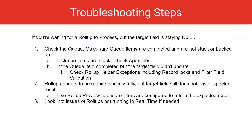If you're waiting for a roll-up to process but the target field is staying null, check the queue. Make sure queue items are completed and are not stuck or backed up. If queue items are stuck, check Apex jobs. If queue items are completed but the target field didn't update, check Roll-Up Helper exceptions, including record locks and filter field validation.